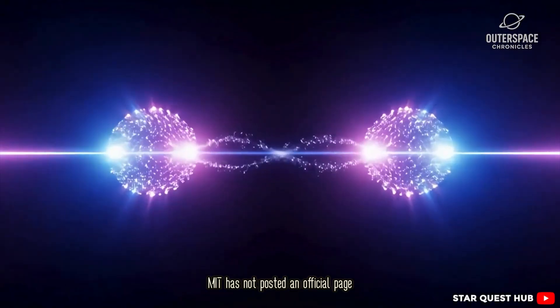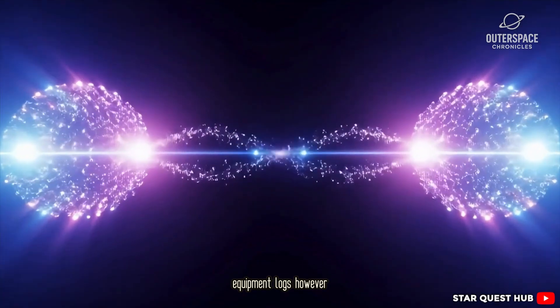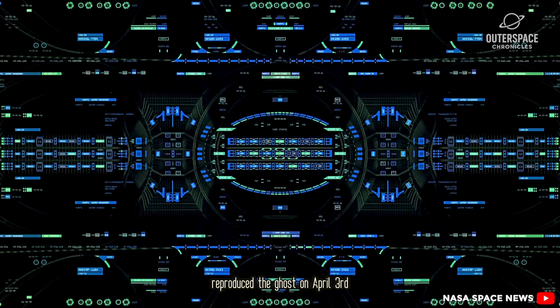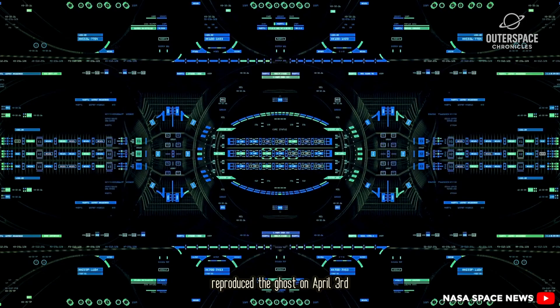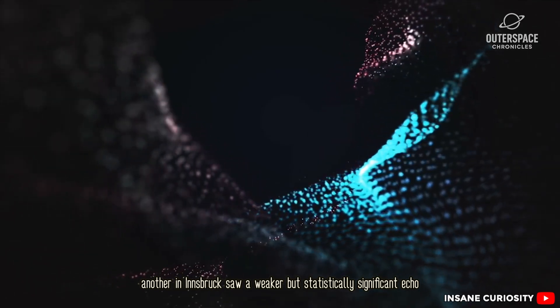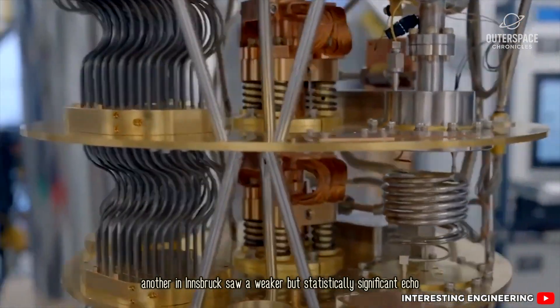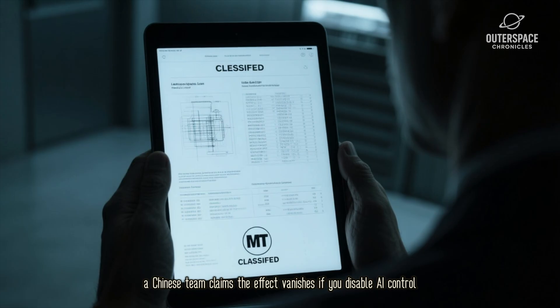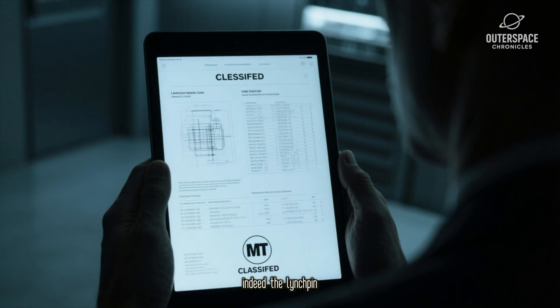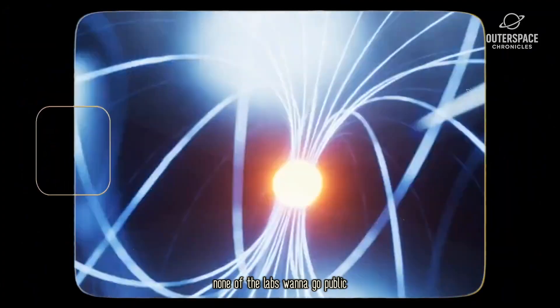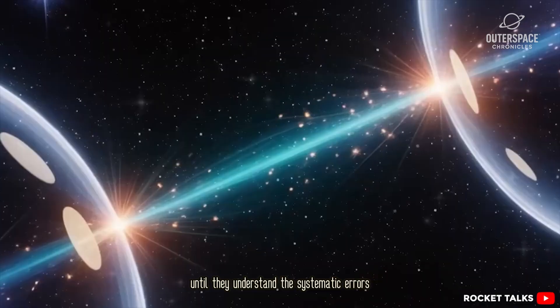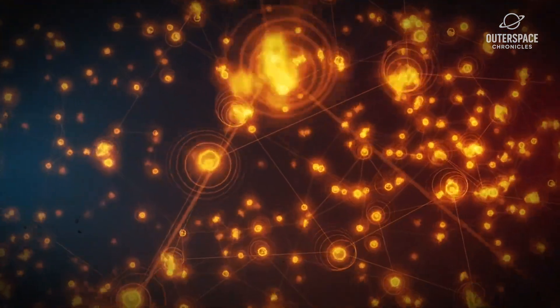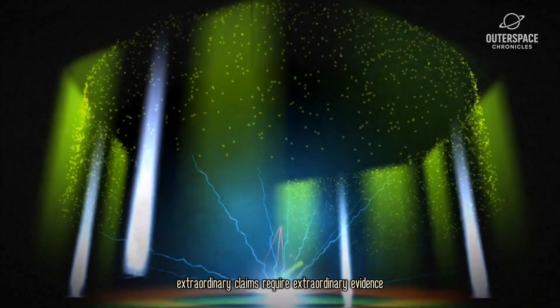MIT has not posted an official paper. Equipment logs, however, leaked to three rival groups. One in Tsukuba, Japan, reproduced the ghost on April 3rd. Another in Innsbruck saw a weaker but statistically significant echo. A Chinese team claims the effect vanishes if you disable AI control, hinting that Lilith is indeed the linchpin. None of the labs want to go public until they understand the systematic errors. Claiming a violation of no cloning is career roulette. Extraordinary claims require extraordinary evidence.